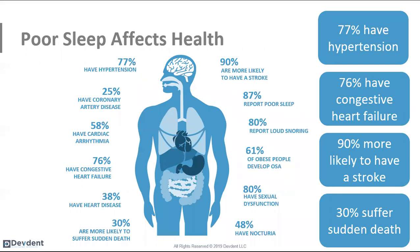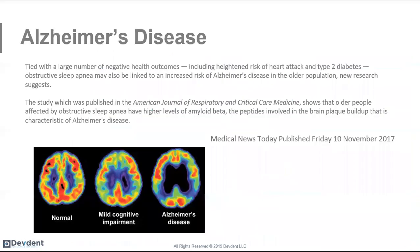Poor sleep has these statistics associated with it: 77% correlation to hypertension, 76% correlation to congestive heart failure, 90% more likely to have a stroke, and 30% more likely to suffer sudden death. If you thought about your patient base and the patients you saw today, how many would have hypertension? A huge number. Thyroid disorders are often hormone-related, and we know hormone regulation is affected by sleep. Patients who are hypertensive, have type 2 diabetes, or complain of daytime tiredness show a high correlation with sleep disorders. Big numbers — huge deal.